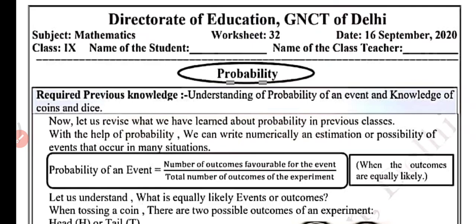So now let us revise what we have learned about probability in the previous class. With the help of probability we can write numerically an estimation or possibility of an event that occurs in many situations. So probability of an event — this is the formula: number of outcomes favorable for the event upon total number of outcomes of the experiment.